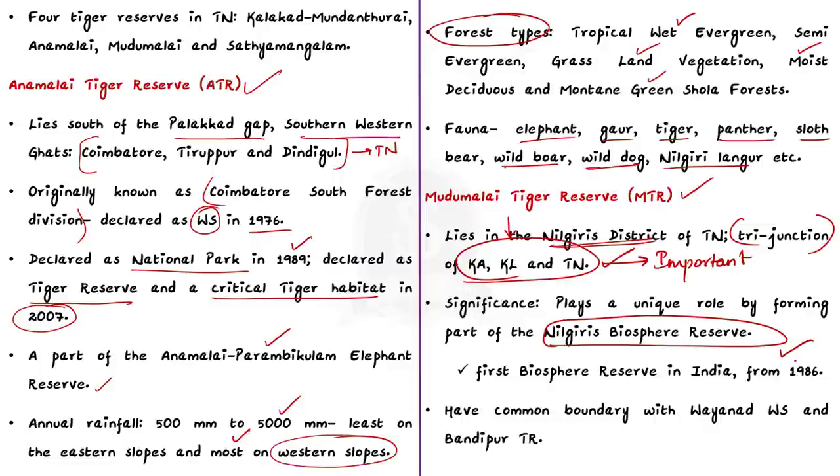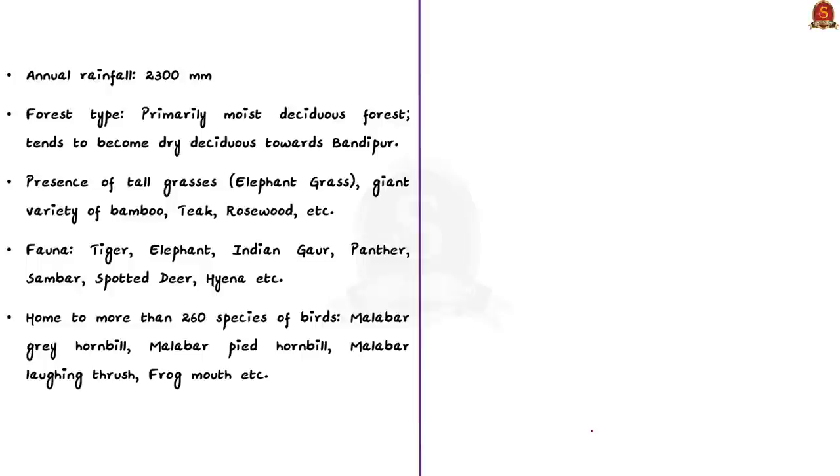Mudumalai Tiger Reserve has a common boundary with Wayanad Wildlife Sanctuary in Kerala and Bandipur Tiger Reserve in Karnataka. Together they form a large conservation landscape for flagship species such as Tiger and Asian Elephants. Mudumalai Tiger Reserve receives an annual rainfall of 2300 millimeters and has a primarily moist deciduous forest type. This Tiger Reserve tends to become dry deciduous towards Bandipur.